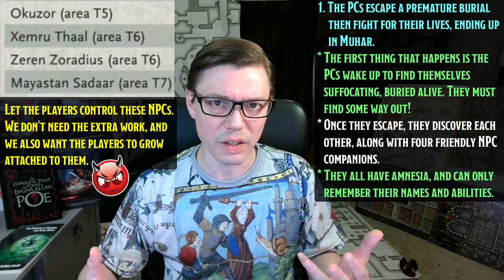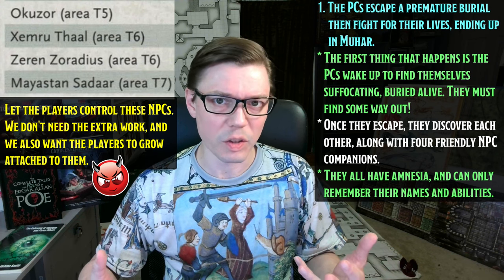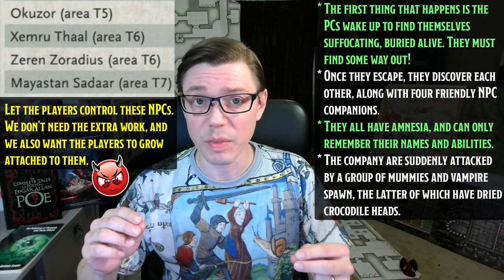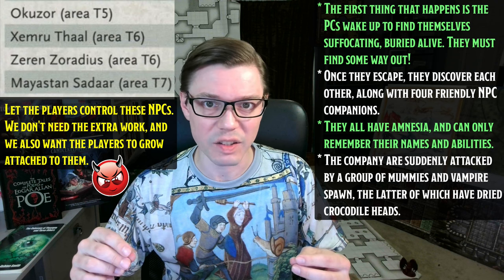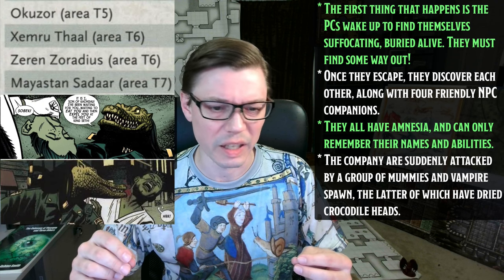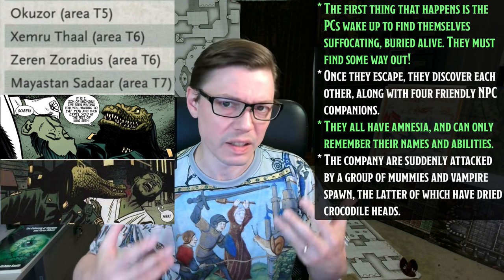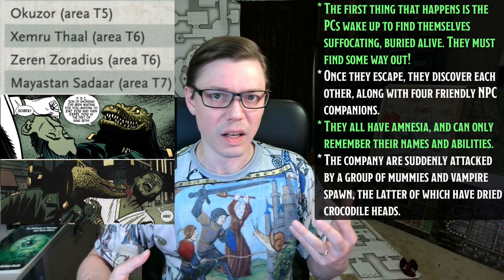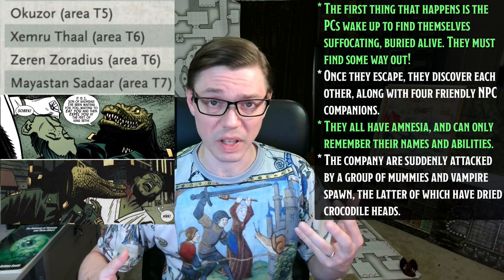After the company meet and socialize and begin to introduce each other, they're going to be attacked by a group of mummies and vampire spawn — described as having heads like those of mummified crocodiles, and everyone wearing desert-appropriate garb. The PCs will have to fight off these crocodile-headed undead along with some mummies. Once they do, and assuming they search the bodies, they'll find a mysterious scroll with some inscrutable markings — perhaps a coded diagram — that cannot be completely deciphered at this time.